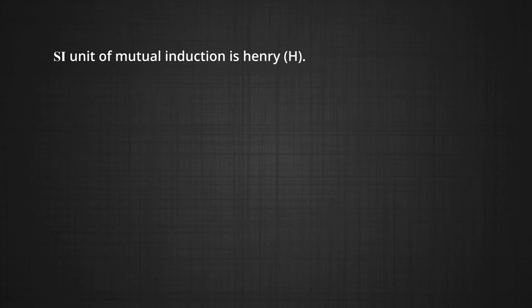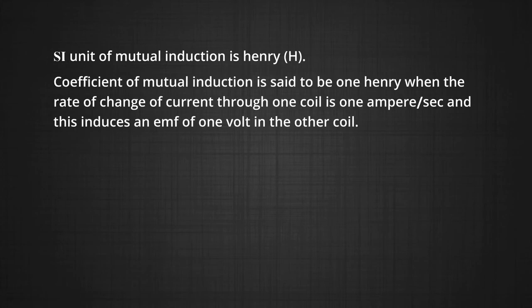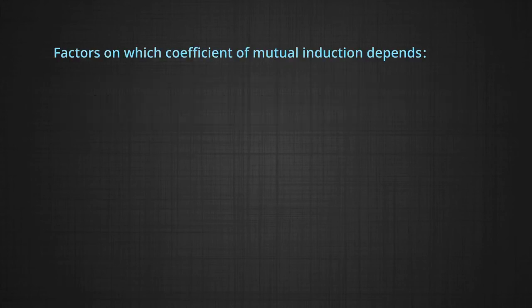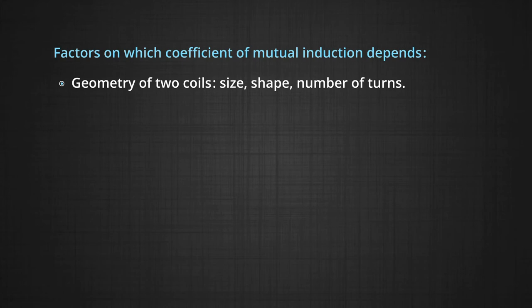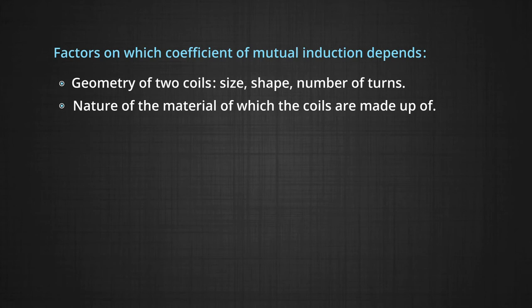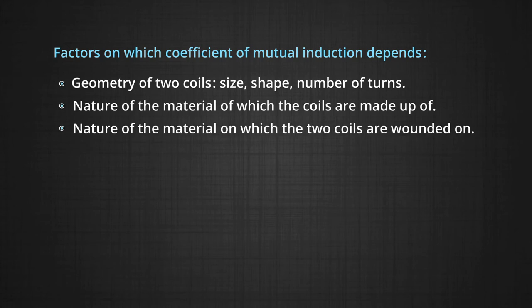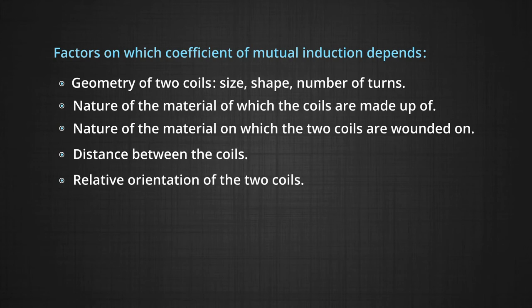The SI unit of mutual induction is Henry, represented by capital H. The coefficient of mutual induction is said to be 1 henry when the rate of change of current through one coil is 1 ampere per second and this induces an EMF of 1 volt in the other coil. Factors on which the coefficient of mutual induction depends are: geometry of the two coils — that is size, shape, number of turns — nature of the material the coils are made of, nature of the material on which the two coils are wound, distance between the coils, and relative orientation of the two coils.